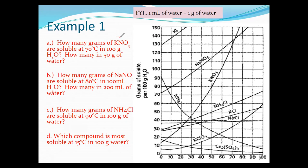We're looking at KNO₃. Here's the KNO₃ line — ignore all the other ones. They want to know how many grams are soluble at 70 degrees in 100 grams of water. Find the 70-degree point on the x-axis and draw a line up to the curve. At 70 degrees, we're looking at about 130 grams of KNO₃ that will dissolve in the water.